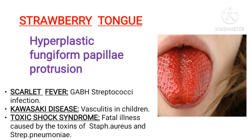First is strawberry tongue. We all know the tongue has three types of papillae: fungiform, filiform, and circumvallate papillae. The fungiform papillae are widely distributed and more prone to infection. Such infection leads to hyperplasia in the cells of the fungiform papillae. Hyperplasia is nothing but the increase in the number of cells, which leads to enlargement and protrusion of the fungiform papillae.